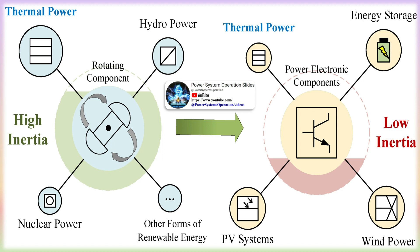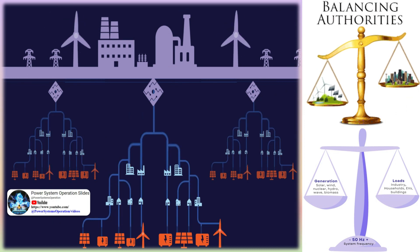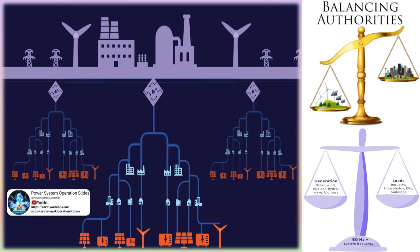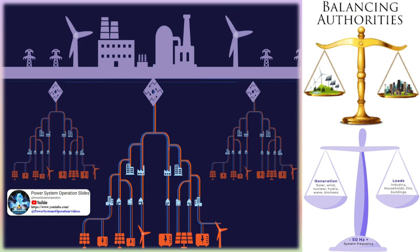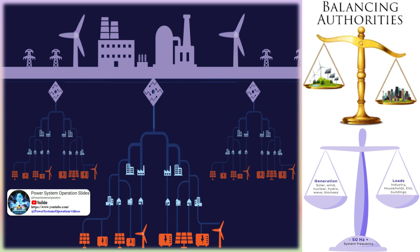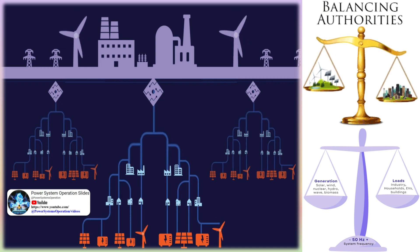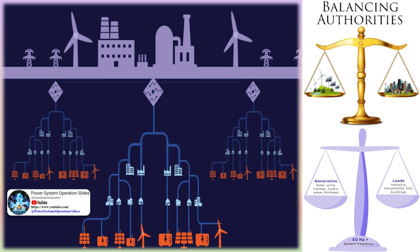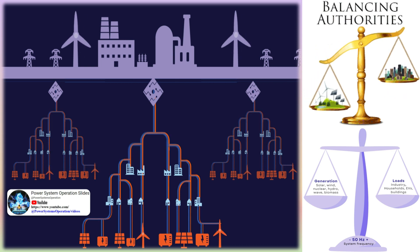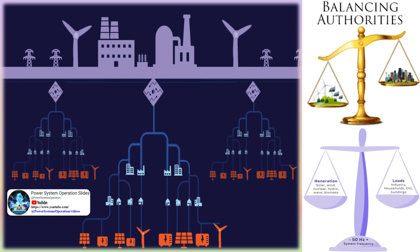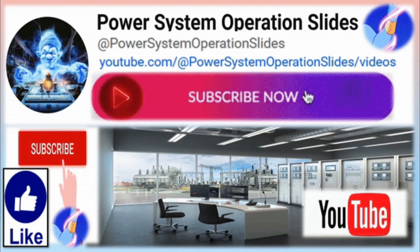In conclusion, maintaining power grid stability is a complex task that requires careful management of production and consumption, frequency stability, integration of renewable energy, grid upgrades, and future planning. It is a critical issue that affects every aspect of modern society. As we continue to transition towards renewable energy sources, these challenges will only become more significant; however, with ongoing research and technological advancements, we are well equipped to ensure a stable and sustainable power grid for the future.